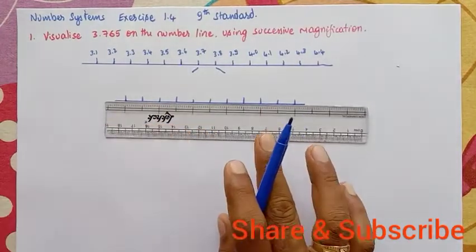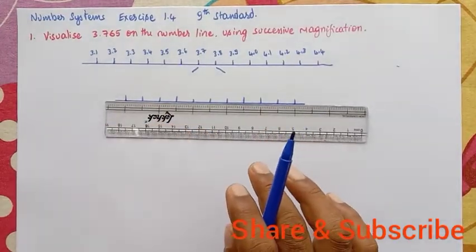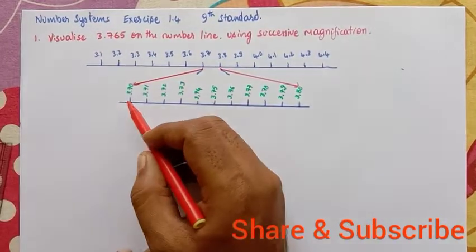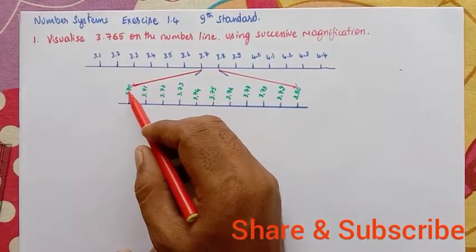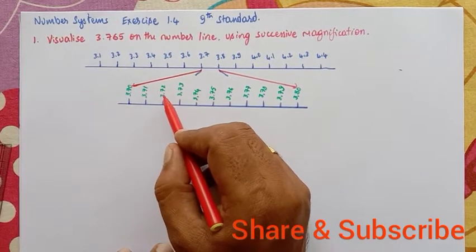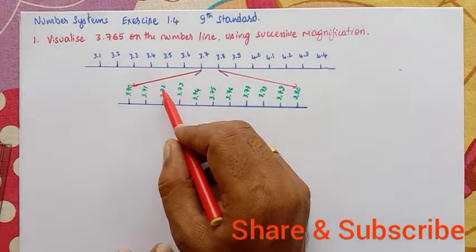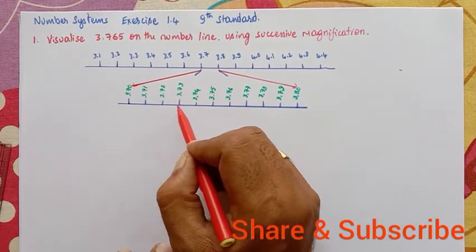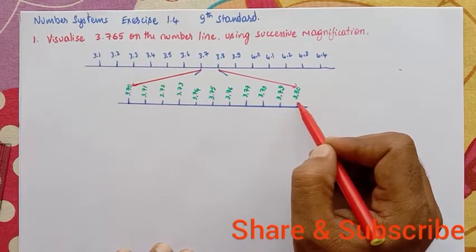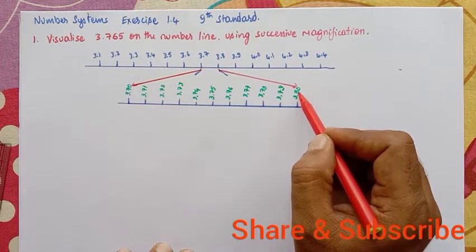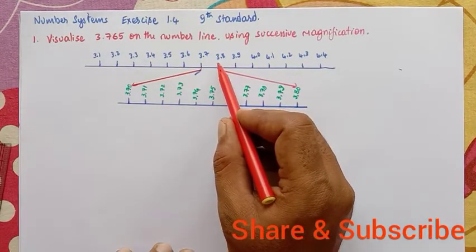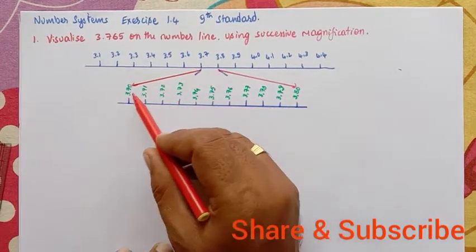So let us name them. This point is 3.70, here 3.71, here 3.72, and likewise, the last is 3.80. So this end is 3.8 and the start is 3.7. We have magnified it and divided it into equal parts.